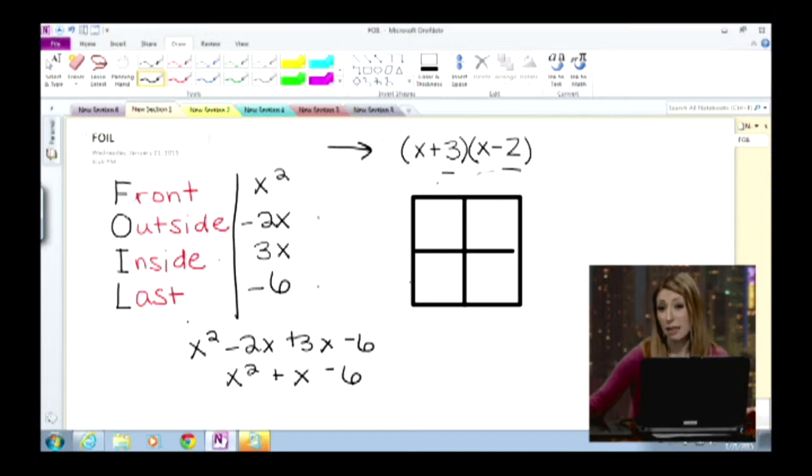If I were doing the same multiplication that I just did using the area model, what I'm going to do is set up one of my binomials as my length, so x plus 3, and one of my binomials as my width, x minus 2. And then from there, what I'm going to do is multiply each of my lengths and widths to get my area, and then I will put them all together to combine like terms.